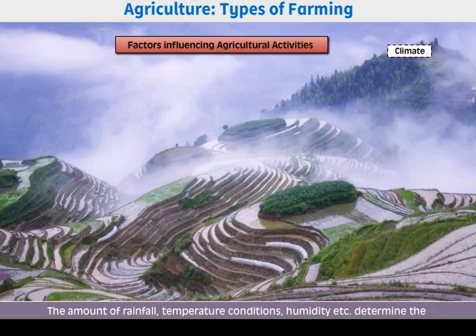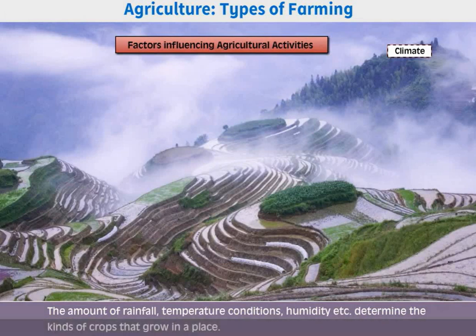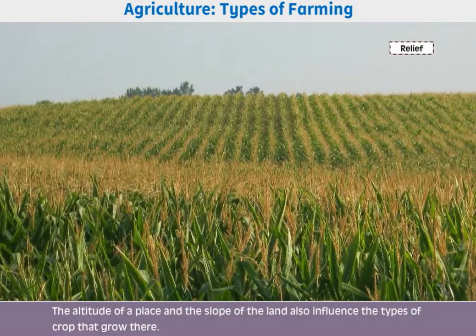Climate influences agricultural activities through the amount of rainfall, temperature conditions, and humidity, which determine the kind of crops that grow in a place. Relief — including the altitude of a place and the slope of the land — also influences the types of crops that grow there.